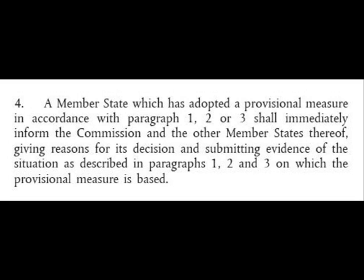Article 55 Part 4 says: A member state which has adopted a provisional measure in accordance with Paragraphs 1, 2 or 3 shall immediately inform the Commission and the other member states thereof, giving reasons for its decision and submitting evidence of the situation on which the provisional measure is based. So at least if a vivisector is doing one of these experiments in the EU, it will have to notify the Commission and other member states.